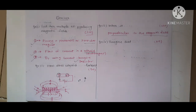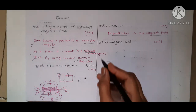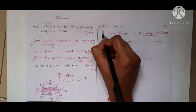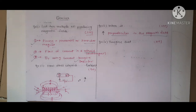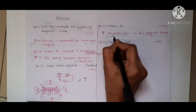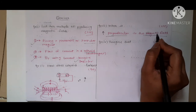Move on to question number 3: when is the force experienced by a current carrying conductor placed in a magnetic field the largest? There is a current carrying conductor in a magnetic field. You need to tell when the force is maximum. The force will always be maximum when the magnetic field and current directions are perpendicular to each other. So magnetic field and current must be in perpendicular directions.